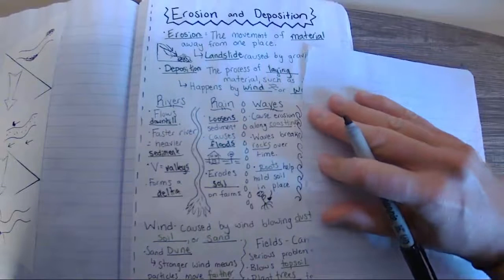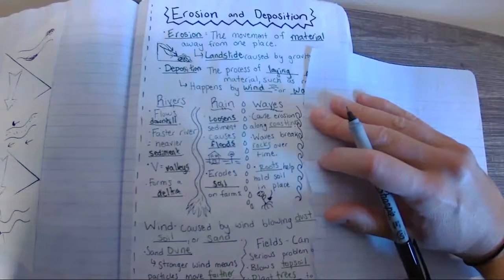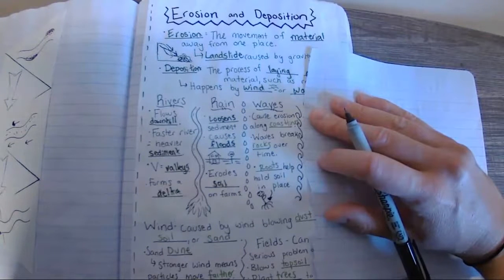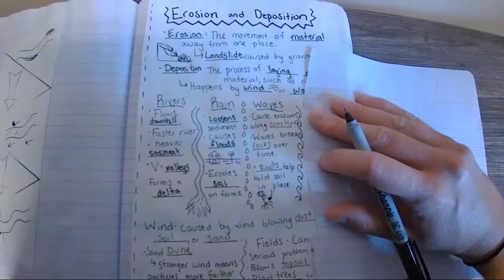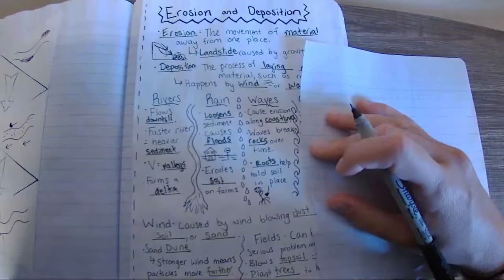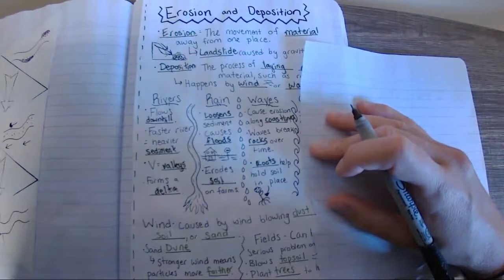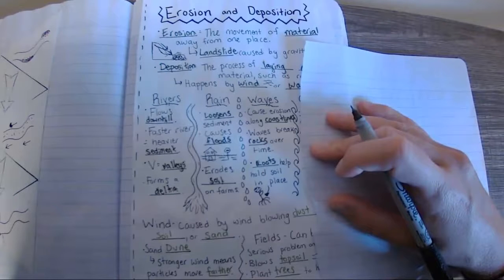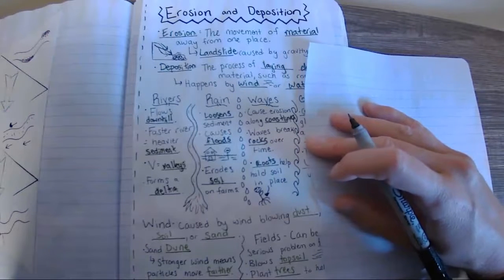Now, we've got waves. Waves can cause erosion along coastlines. The waves break rocks over time. However, roots can help hold the soil in its place. So we'll go ahead and I'm going to darken those ones for us. Again, waves can cause erosion along the coastlines. The waves break rocks down over time. And then the roots can help hold the soil in its place.